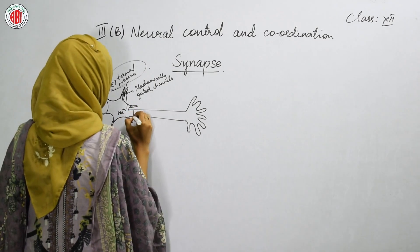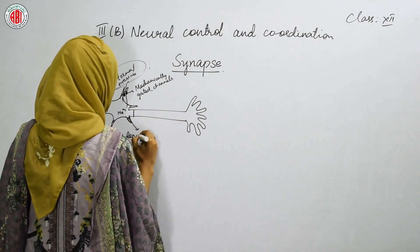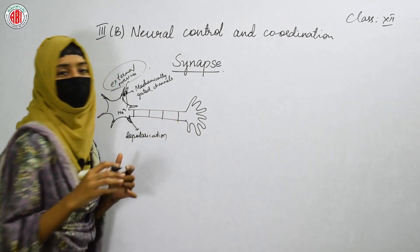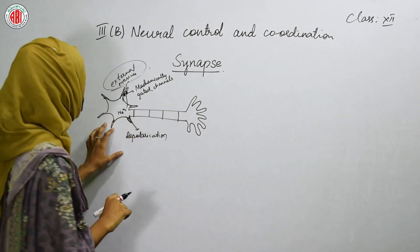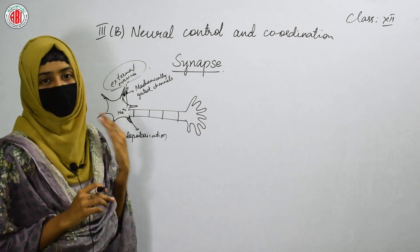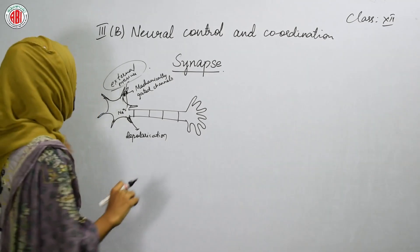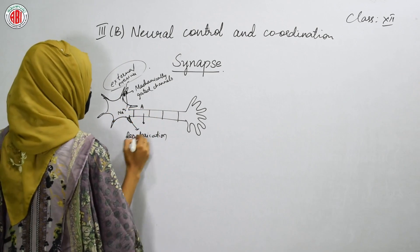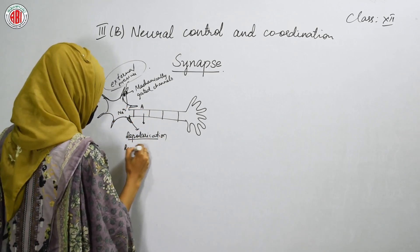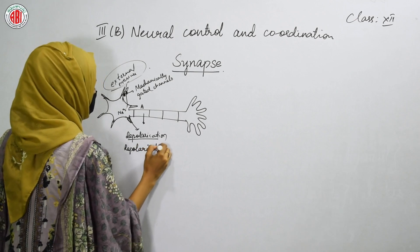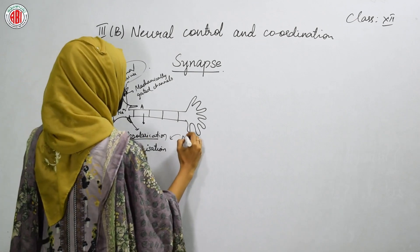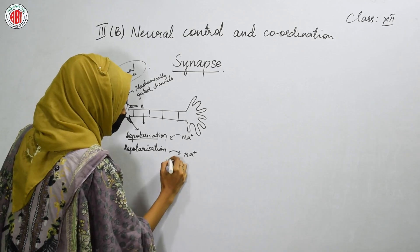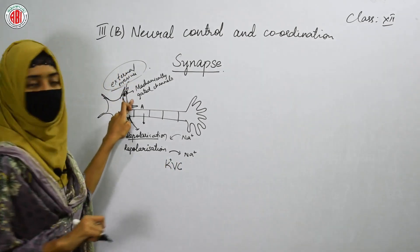Once the sodium starts entering into the cell, it will cause the depolarization of the cell. Once the depolarization of this region happens, it will stimulate the depolarization of another segment as well. The axon shows different segments, and in those different segments the depolarization is going to occur after a period of time. After depolarization, repolarization is also seen. Depolarization means entry of the sodium ions; repolarization means exit of the sodium ions due to the opening of potassium voltage-gated channels.